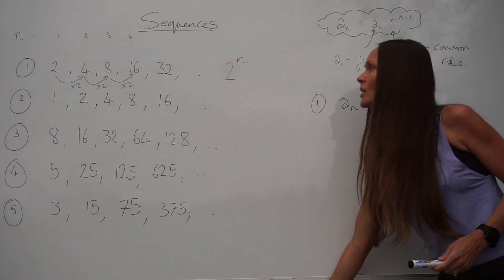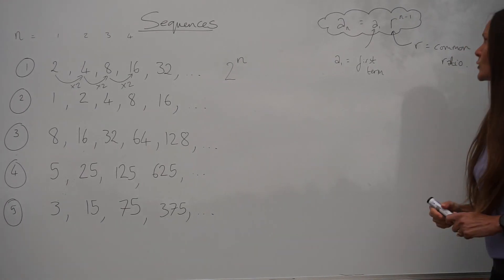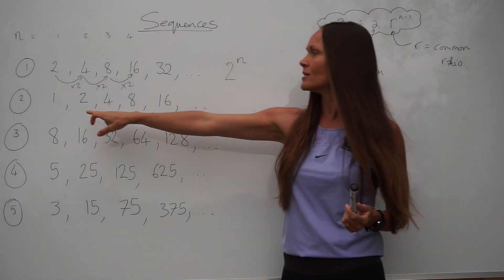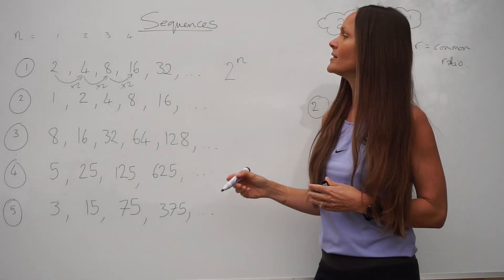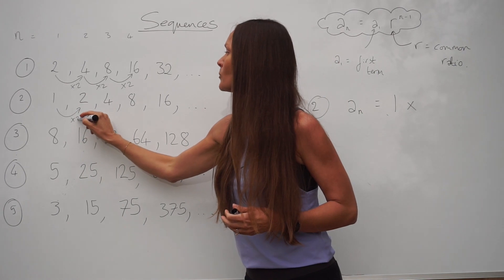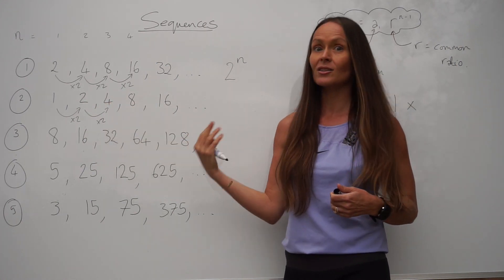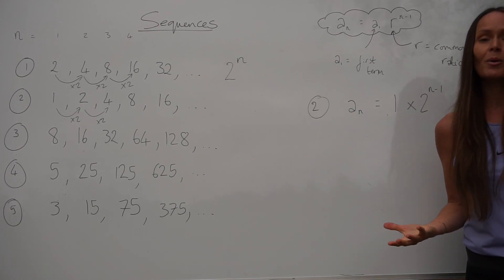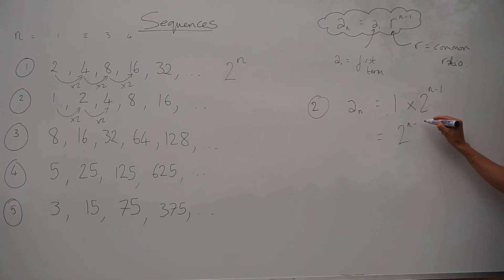Now let's have a look at question 2. We're going to use the formula again to work out the nth term. To work out the nth term, you need to first take the first term in the sequence. This time, the first term in the sequence is the number 1. Then you multiply this number by the common ratio — the number that you're multiplying by each time in the sequence. In this sequence we're multiplying by 2, because 1 times 2 is 2, 2 times 2 is 4, 2 times 4 is 8, and so on. So the common ratio is still positive 2, and the power is n minus 1. If you multiply something by 1, it just stays the same. So 1 multiplied by 2 to the power of n minus 1 is just 2 to the power of n minus 1.